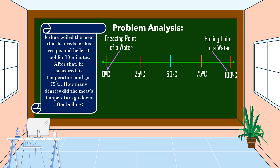In this problem, we will use this idea: the boiling point of water is 100 degrees Celsius. This means that before Joshua let the meat cool down for 10 minutes, the temperature of the meat was 100 degrees Celsius, since it was boiled.